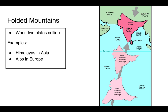Folded mountains are formed when two plates collide. Examples on Earth include the Himalayas in Asia and the Alps in Europe. The Himalayas were formed when, millions of years ago, the Indian plate began to move towards the Eurasian plate. When the plates collided, the energy forced the rock up thousands of feet into the air. Obviously, this did not happen instantly — it took millions of years and was a very slow process. And still today, the Indian plate continues to move towards the Eurasian plate, and the Himalayas are continuing to grow taller.